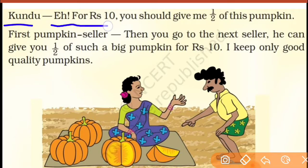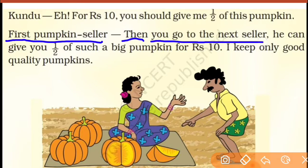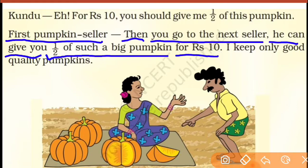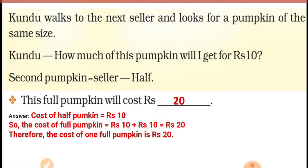Kundu keh raha hai: for rupees ten you should give me half of this pumpkin. One upon two ka matlab half. Usne bola ten rupees mein tu mujhe half pumpkin dena chahiye. First pumpkin seller ne phir se bola: then you go to the next seller. Phir tu aage ja. He cannot give one upon two means half of such a big pumpkin for rupees 10 — tu aage ja, doosre dukaan par ja, woh tujhe 10 rupees mein half pumpkin dega. I keep only good quality pumpkins — mere paas bilkul acchi quality ke pumpkin hain, isliye 1 upon 4 part hi milengi, 1 quarter hi milengi 10 rupees mein.